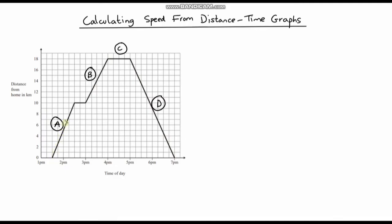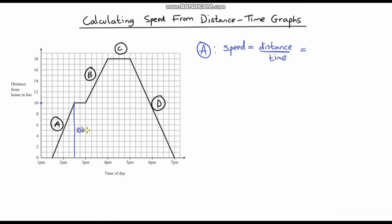Let's start with stage A. To calculate speed, it's the total distance divided by the time — how far they've travelled divided by how long it's taken them. So what is the distance travelled during this first section of the journey? Well, they've gone from 0 kilometres and stopped at 10 kilometres. So the total distance is 10 kilometres.